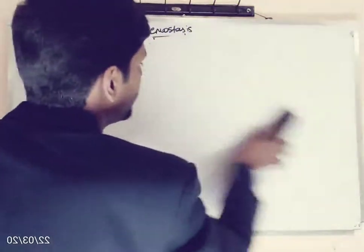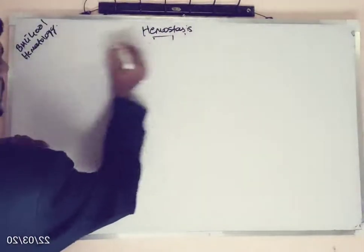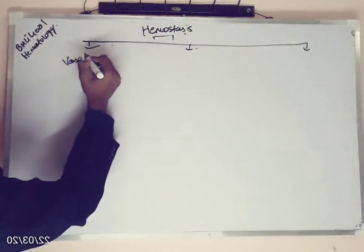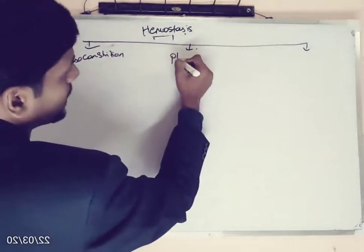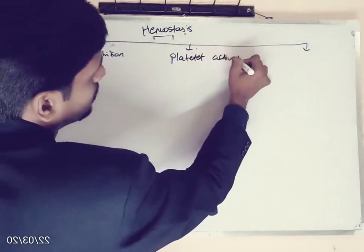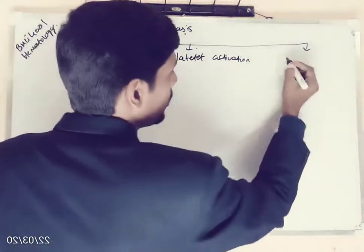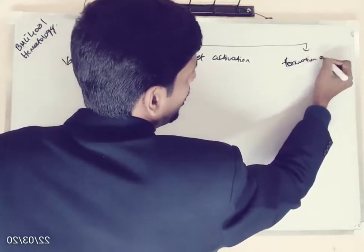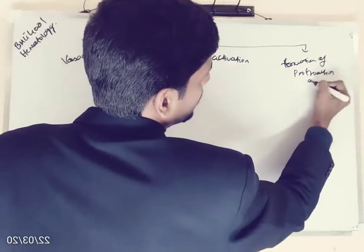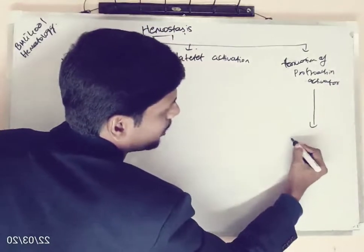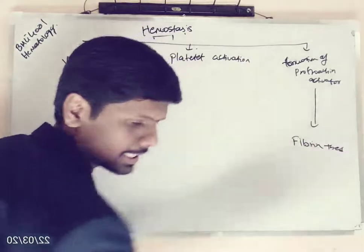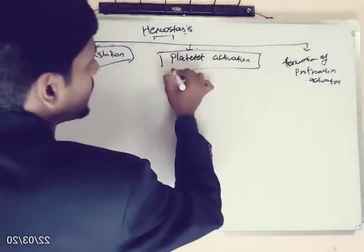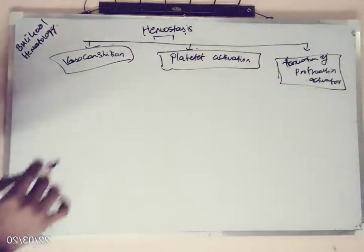The mechanism of hemostasis consists of three stages totally: vasoconstriction, platelet activation, and coagulation of blood — formation of prothrombin activator, which ultimately results in formation of fibrin threads and clotting. By these three mechanisms, our body will prevent bleeding.